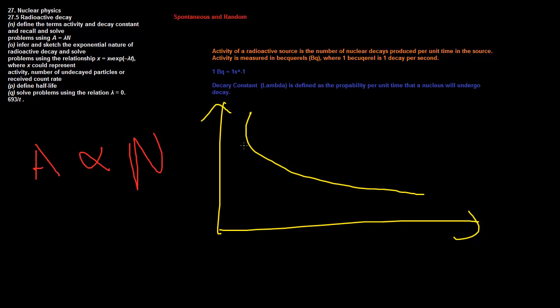So you can see the gradient changes depending on the actual number of particles that are left. So this is number of particles, this is time. So the activity, which is the gradient, the rate, this is decreasing, goes lower as the number goes lower, and that's because of this idea here.